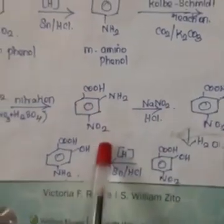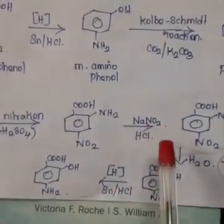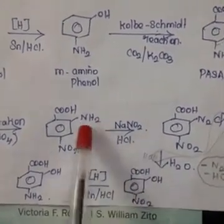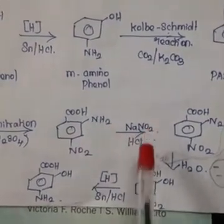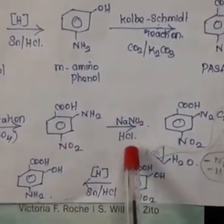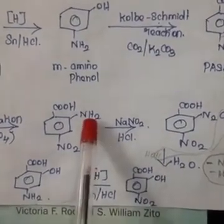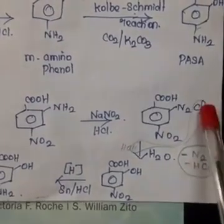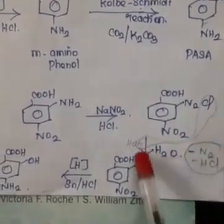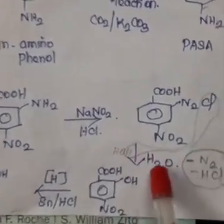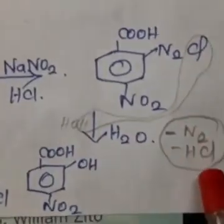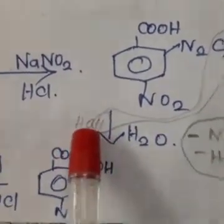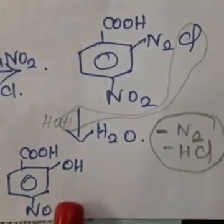Then the aromatic amino group reacts with NaNO2 and HCl in a diazotization reaction, converting the -NH2 to a diazonium chloride (-N2+Cl-). On reaction with water, HCl is removed and N2 is also removed, leaving an -OH group attached at that position.